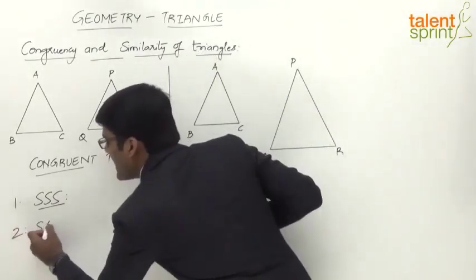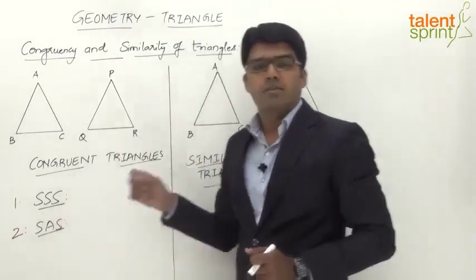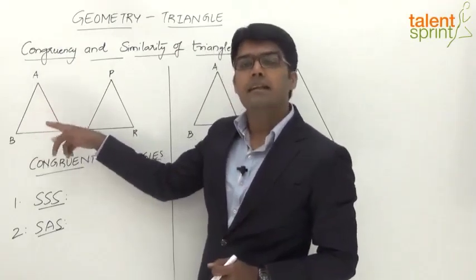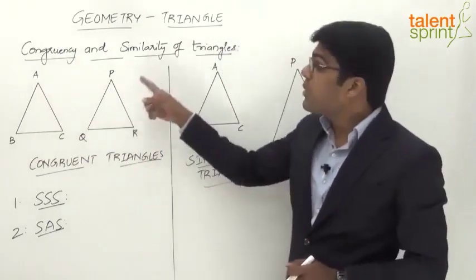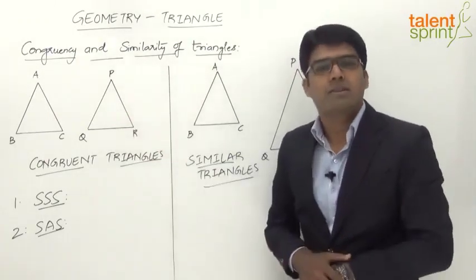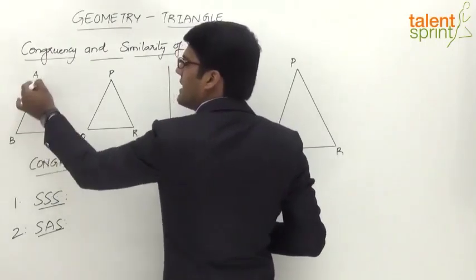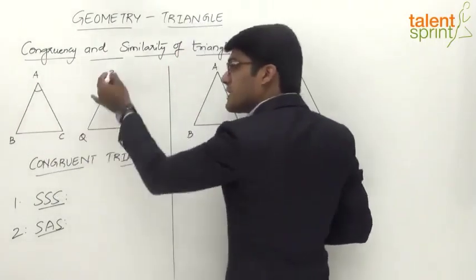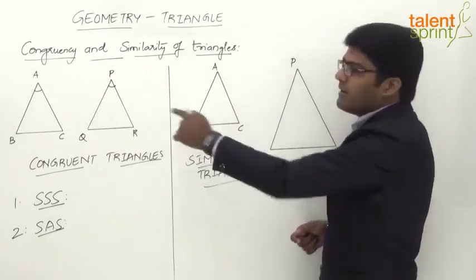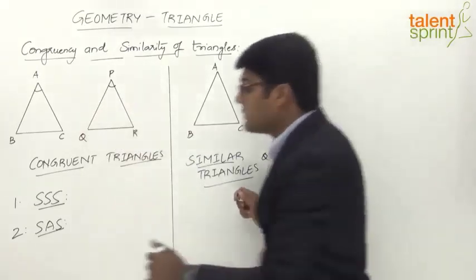The second is SAS congruency — Side Angle Side congruency. If any two sides of triangle ABC and the angle included between them are equal to the corresponding two sides of triangle PQR and the angle included between them, then the two triangles are congruent. For example, sides AB and AC with the angle between them should equal sides PQ and PR with the angle between them.